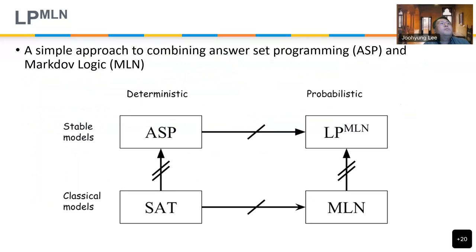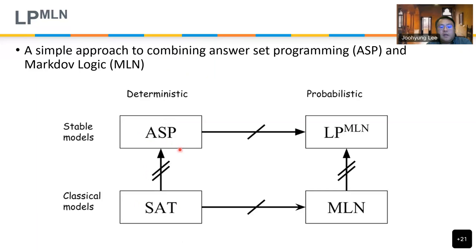As an analogy: classical propositional logic is to satisfiability as ASP is to stable models — ASP tries to extend this in ways that avoid some defects of satisfiability. Markov logic goes from the deterministic nature of classical logic to a probabilistic interpretation. LPMLN in a sense is similar: you can view it as extending ASP to work probabilistically, or as fixing the defects of Markov logic networks by replacing classical logic with logic programs.